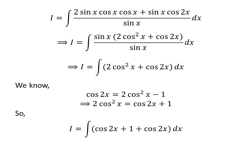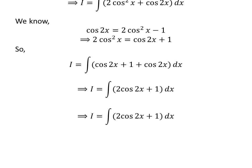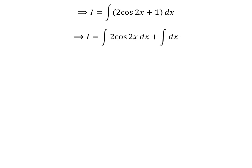Replacing 2cos²(x) with cos(2x) + 1 in the integral gives us I equal to the integral of cos(2x) + 1 + cos(2x), which simplifies to 2cos(2x) + 1. By the linearity property of integration, I equals the integral of 2cos(2x) dx plus the integral of 1 dx.